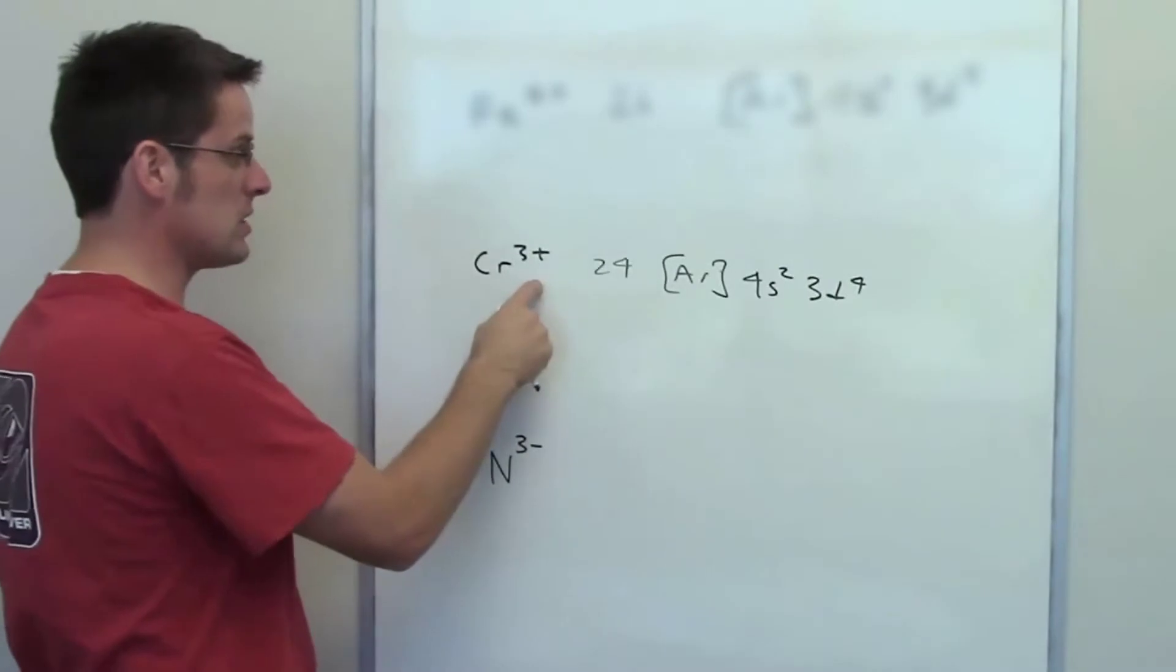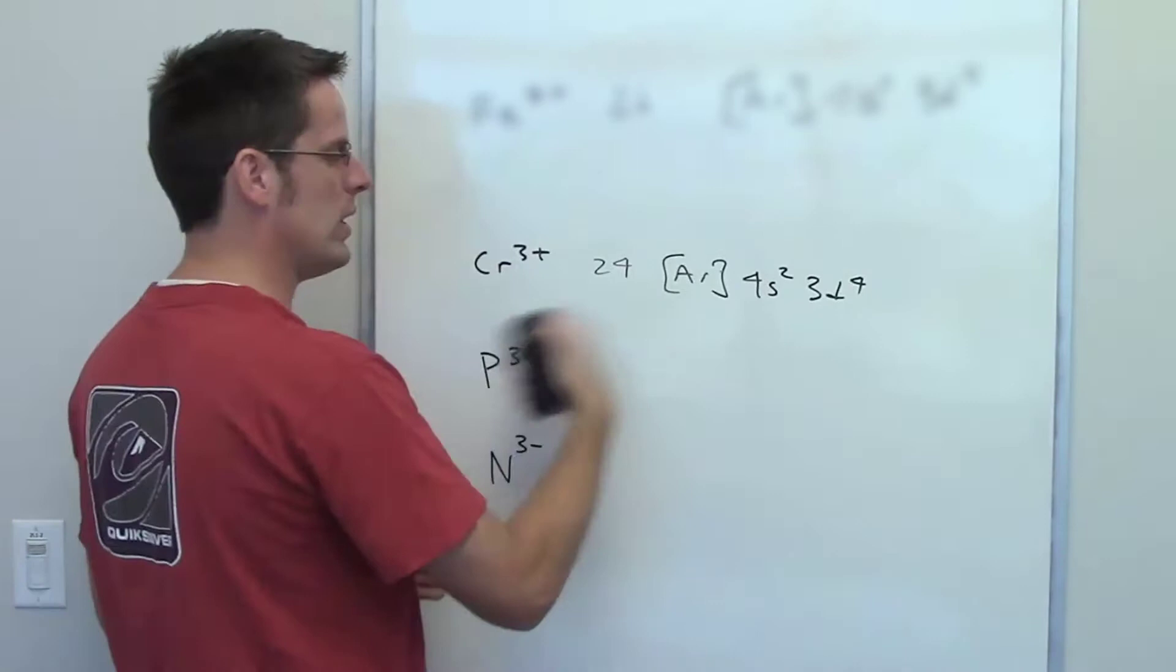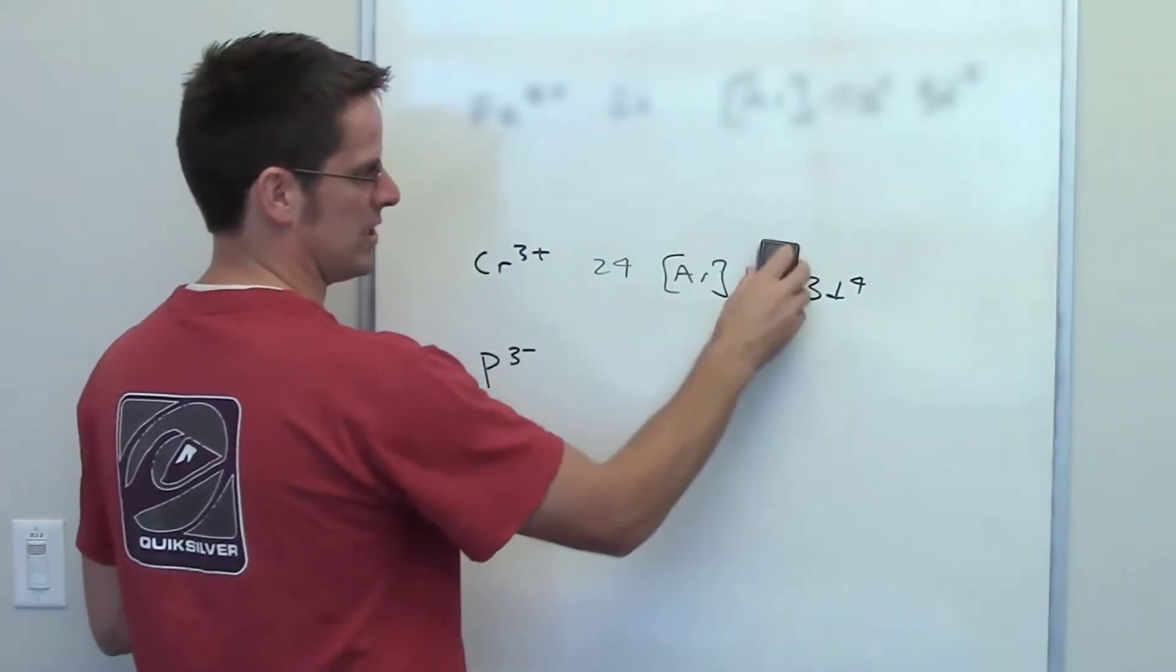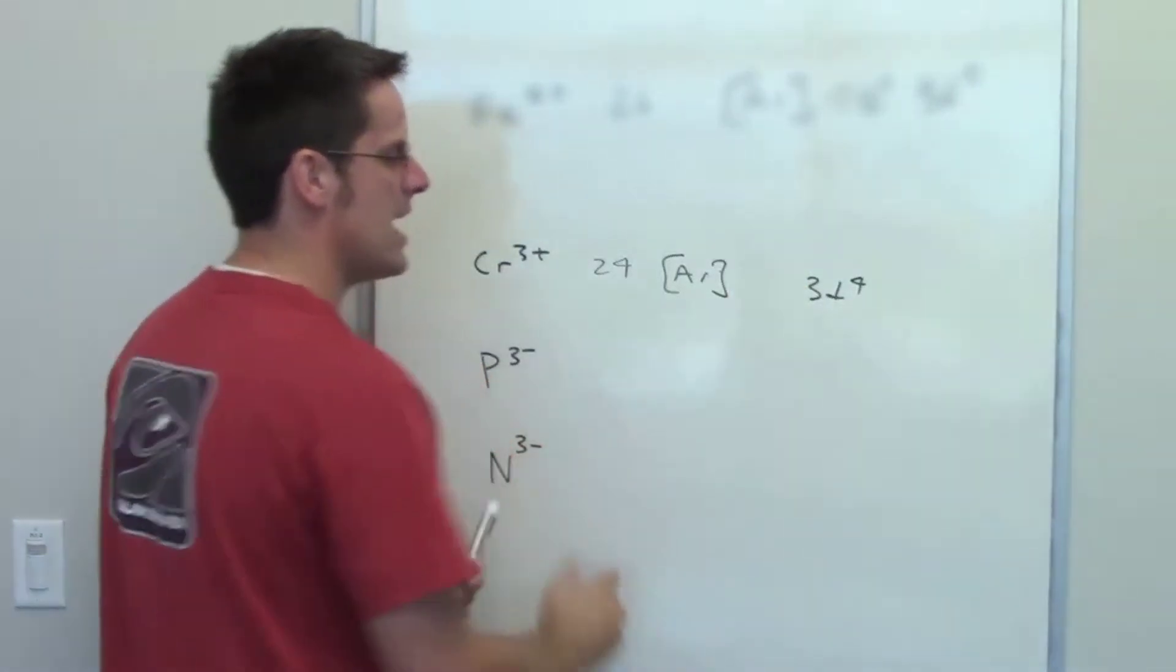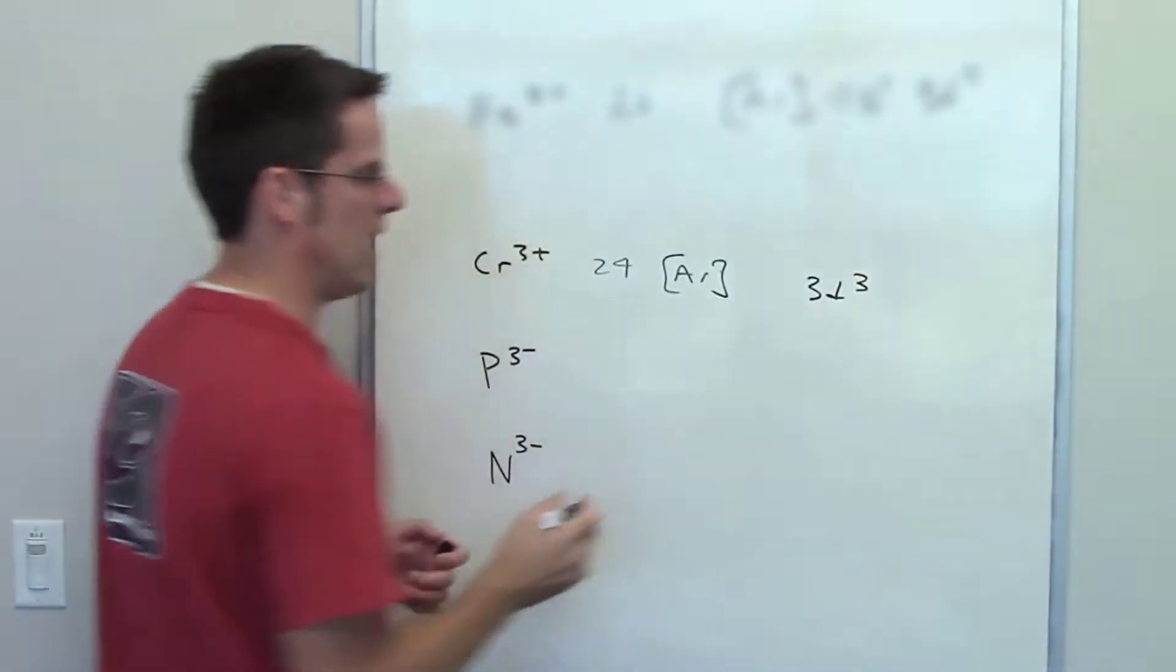So when it loses three electrons from where is it going to lose them? Well of course it will lose the first two from this 4s orbital and then it has to lose its third electron from the 3d orbital which leaves you only three electrons left.